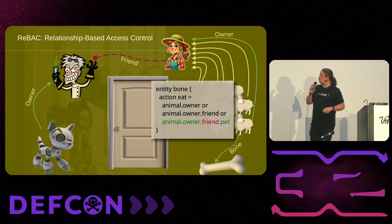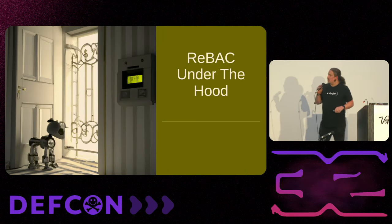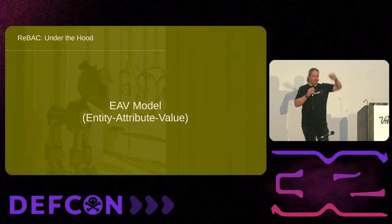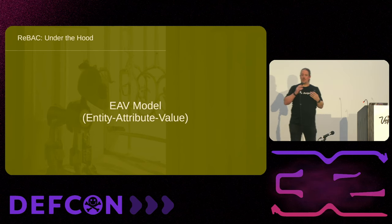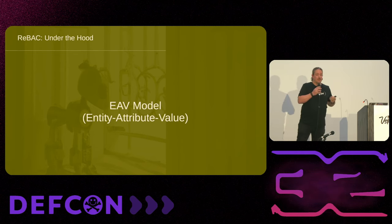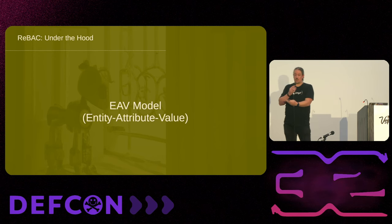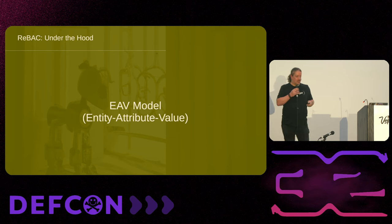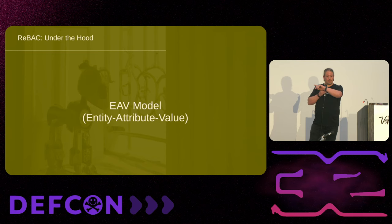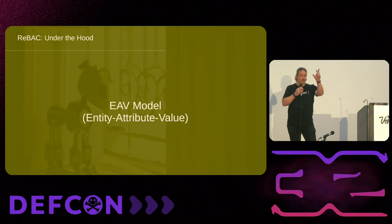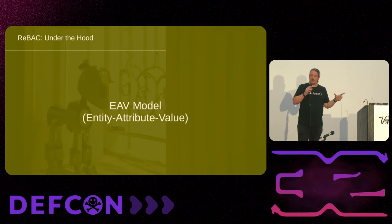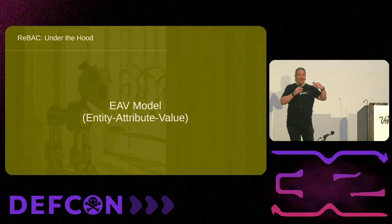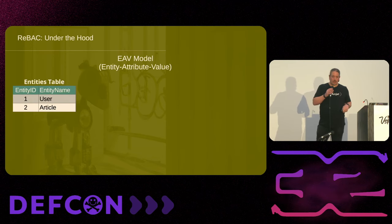Under the hood — who here is familiar with the entity attribute value (EAV) model of designing? If you've ever done any content management systems where you've got an undefined number of entities at the beginning of your project, you want a way to create new entities without having to do a database deployment. The EAV model basically says you have a table that defines entities and another table that defines the attributes and values for that entity. If you want to add another entity, it's just another row in a table — nice and simple.